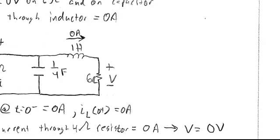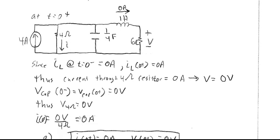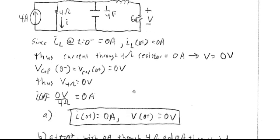With 4 amps from the current source and 0 volts across the capacitor, the 4 ohm resistor also sees 0 volts. By Ohm's Law, 0 volts divided by 4 ohms is 0 amps, so I through the resistor is 0 amps. With 0 amps through the inductor and 0 amps through the 4 ohm branch, V at 0+ is also 0 volts. Therefore I(0+) = 0 A and V(0+) = 0 V.